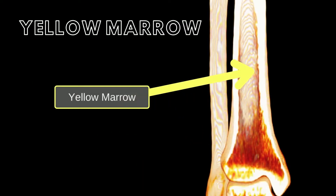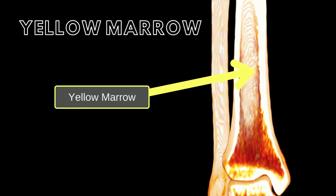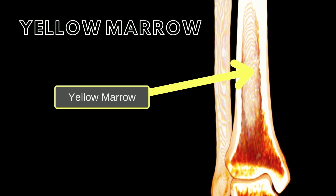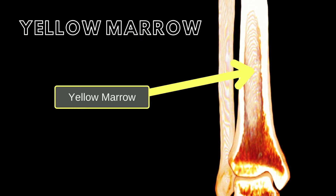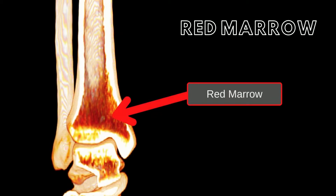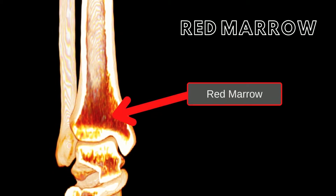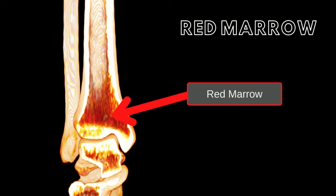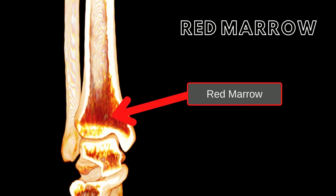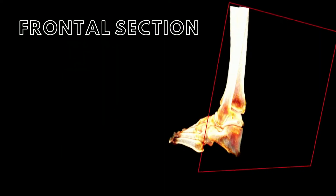Yellow marrow, which is mostly fat cells, is in the shaft of the bone and is used as an energy reserve. Red marrow contains stem cells, which differentiate into red and white blood cells, as well as platelets. Red marrow can be found within the trabecular bone, closer to the articulating ends, and is important in blood cell formation.